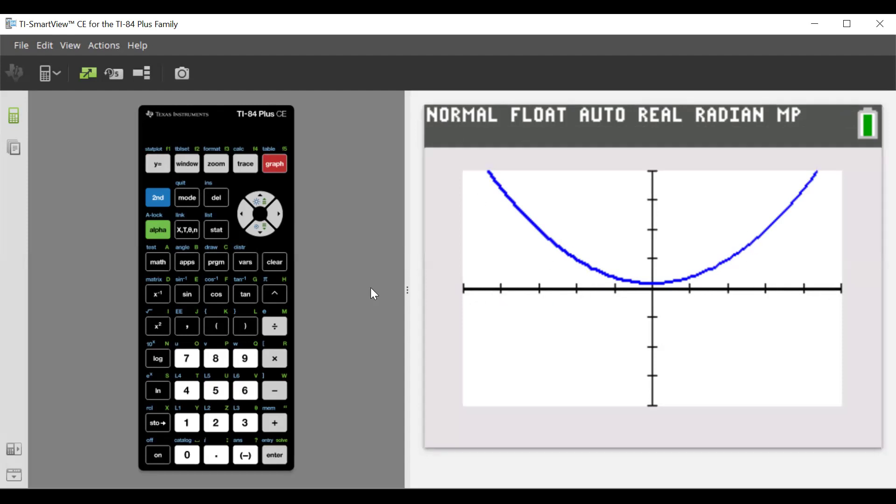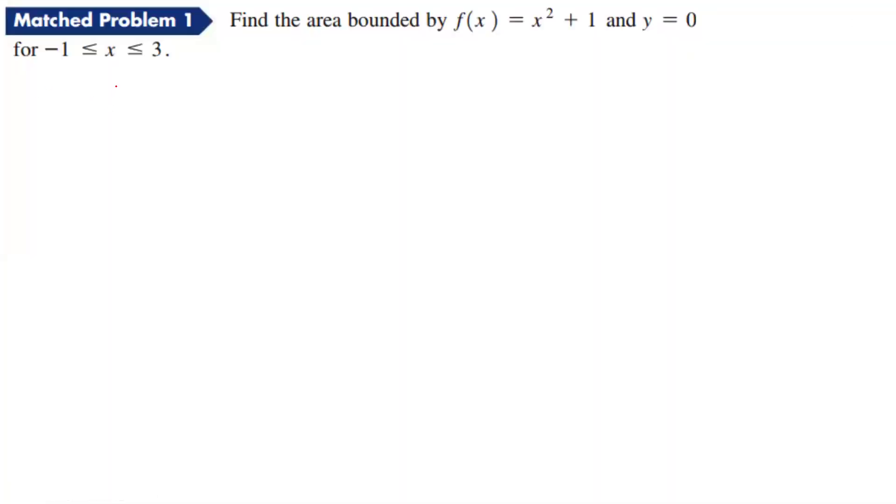We can just use our equation and put it in. We're just going to have the integral from -1 to 3 of (x² + 1) and then we're going to subtract off zero, dx.